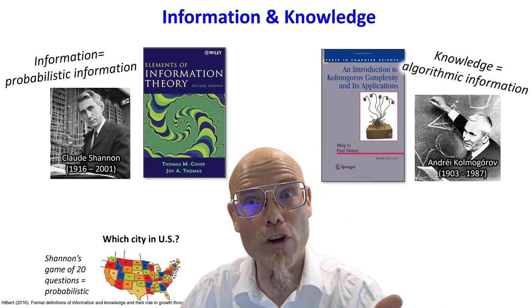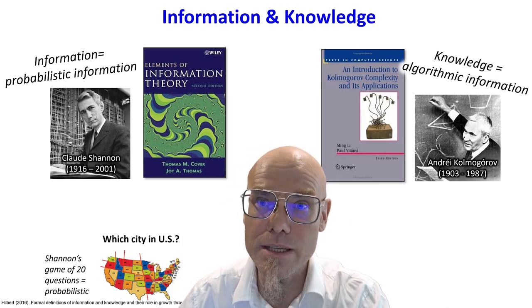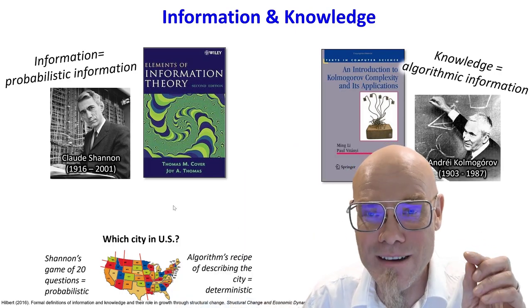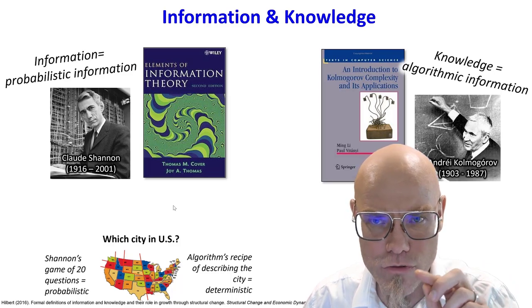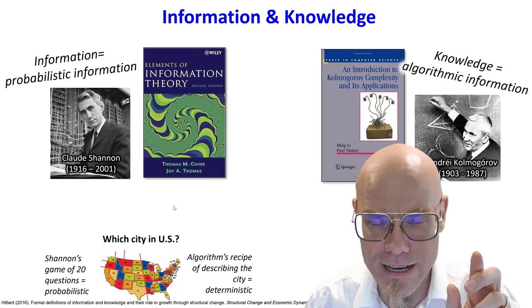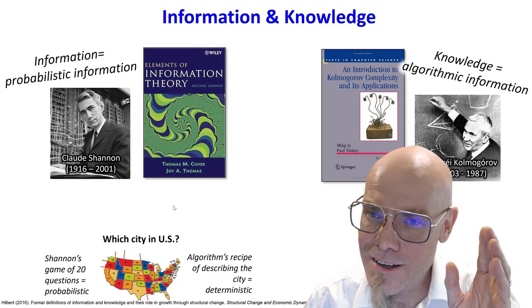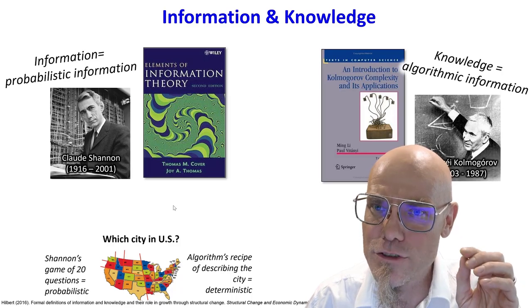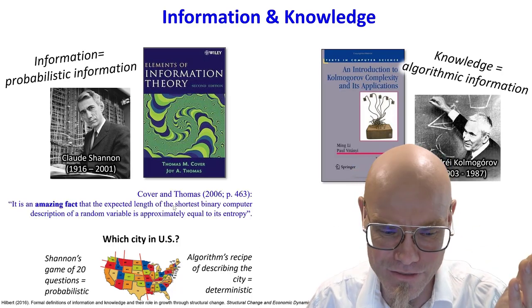But I could also compute the answer. How do I do that? Well, I give you a recipe of how to drive to the city. And it turns out that the number of bits I need on average to describe how to drive to that city that I have in mind, let's say I have San Francisco in mind, is on average asymptotically the same number of bits I need to communicate the city to you. And that also kind of makes sense if you think about it.